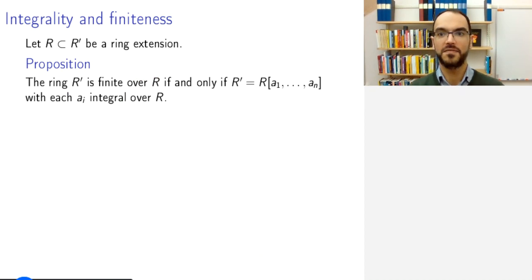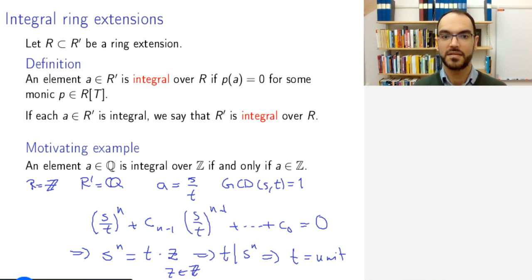Now, speaking of finiteness, recall from the previous example that this would, this example somehow motivates why we require the polynomial to be monic. If we remove the requirement to be monic, then any rational number will satisfy a polynomial equation, because this a equals s divided by t, if we have removed this monicity property, then we can simply take ta - s equals zero, that is a polynomial equation in a with integer coefficients.